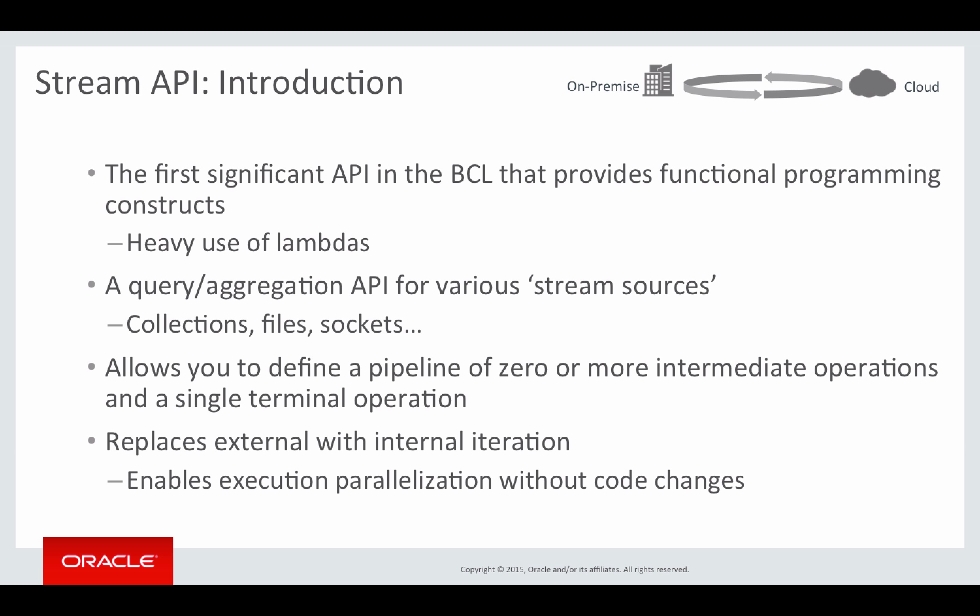It basically allows you to define a pipeline of zero or more intermediate operations followed by a single terminal operation. The pipeline itself is lazily defined, so none of the operations actually occur until the terminal operation is invoked — then stream processing kicks off and goes through the pipeline of operations, finishing with whatever the terminal operation does and returning the final result. One important aspect of the Stream API is that it replaces external with internal iteration, which allows Java to do things in parallel, because we are not creating imperative loops but all of that happens internally — giving Java the choice to process serially or in parallel.